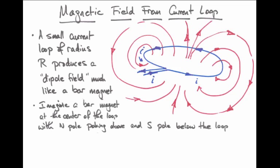If we imagine the bar magnet in this picture, its north pole would be pointing up above the loop, and its south pole would be pointing down below the loop. At the very center of the loop, the magnetic field has a formula that you should remember. Its value is mu naught times I over 2R. That's valid only at the very, very center of the loop.